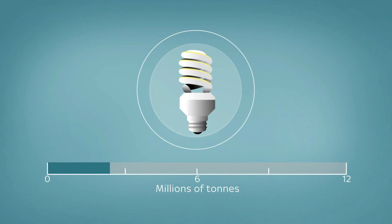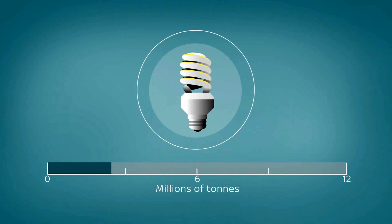Switching to energy-saving light bulbs saves 120 kilograms per household. That's 3.2 million tonnes of CO2 if every home in the UK followed suit.